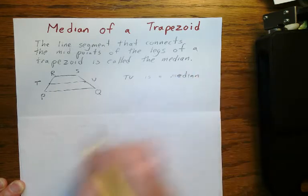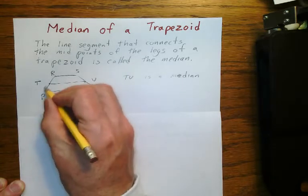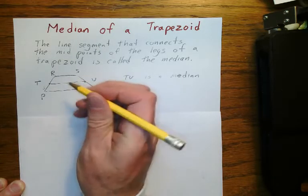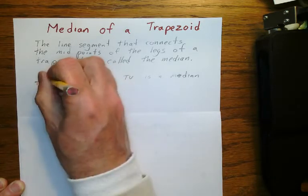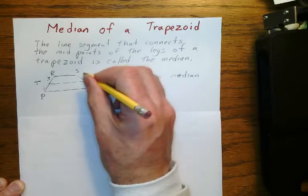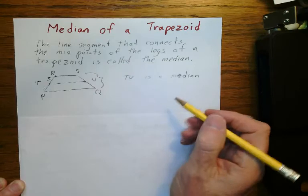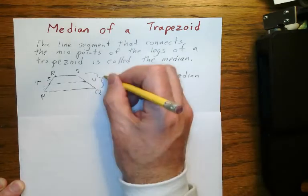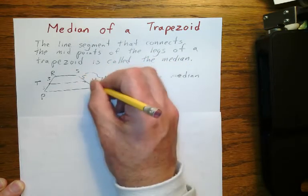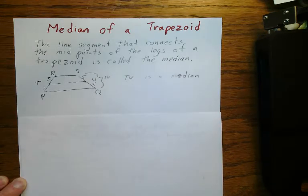What does it mean to be the midpoint? It means that if this segment PT is 3, then RT is also 3. It means if the whole segment SQ is 10, that this is 5 and that is 5. That's what it means to be the midpoint.